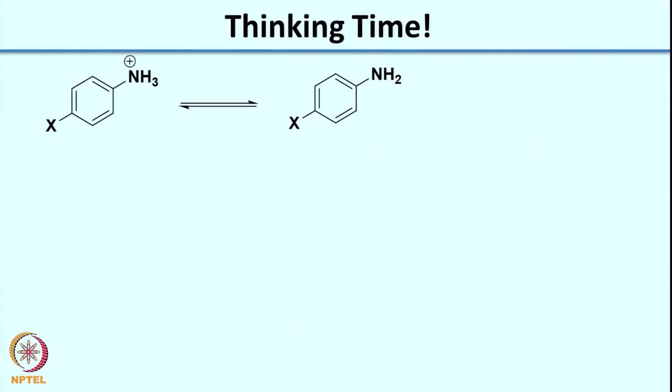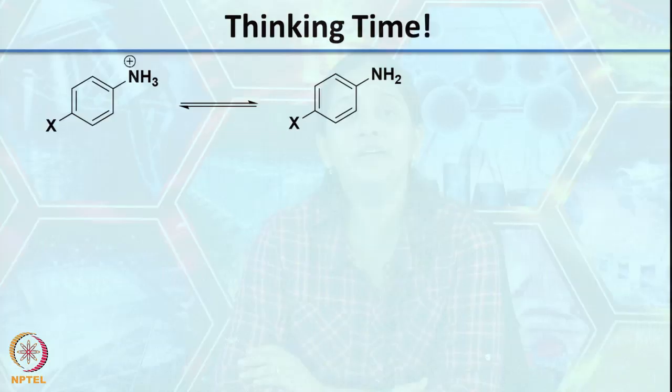Since the negative charge is decreasing from reactant to product rather than increasing as in benzoic acid dissociation, you can think of it as similar to generating a positively charged intermediate — hence the negative rho. Use a similar approach to predict the magnitude and sign of rho for the next reaction given. Thank you, see you in the next lecture.